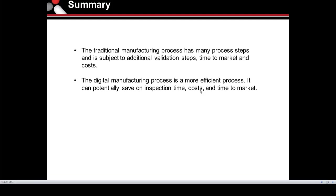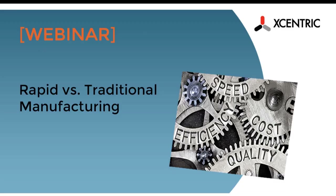In summary, the traditional manufacturing process has many steps and is subject to additional validation steps, longer time to market, and higher cost. If you're needing parts in hand fast, it's probably not the route to go. The digital or rapid manufacturing process is going to be more efficient, potentially saving on inspection time, costs, iterations, and time to market. Thank you.